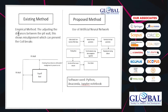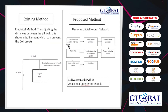We compared the existing method with the proposed method. In the existing method, workers use an empirical method — tried and tested — which normally works, but there are times when coil breaks still occur. The empirical method involves adjusting the distances between the payoff reel and the pit wall. We will now use an artificial neural network instead.